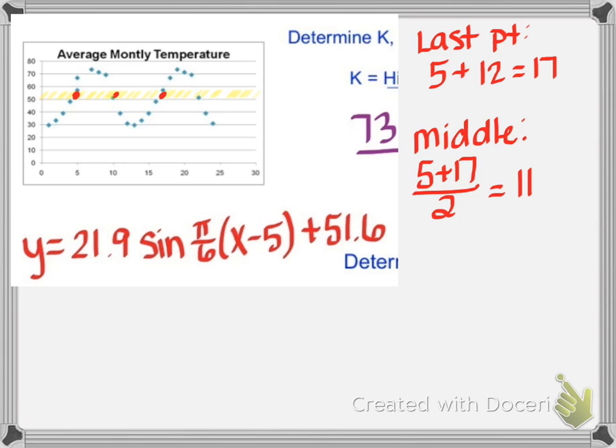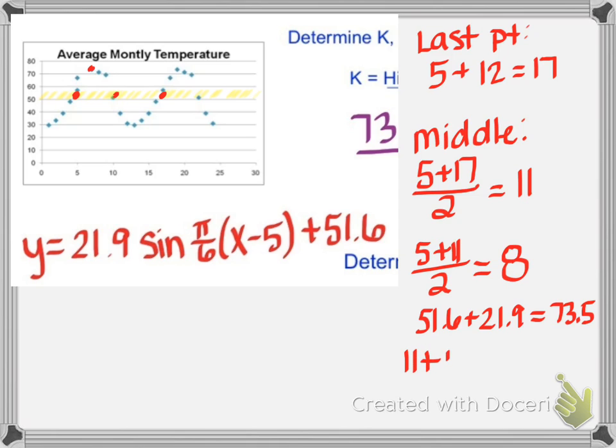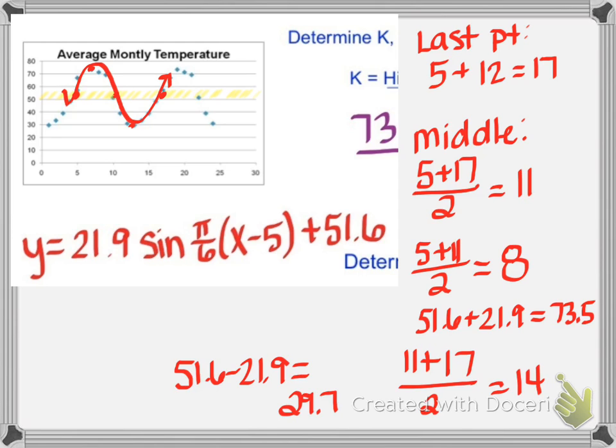I'm going to need to find the middle of 5 and 11. So I'm going to add 5 and 11 and divide by 2, and I'm going to get an x-value of 8. Now to find the y-value, I'm going to take the center line, that 51.6, and add the amplitude to it, 21.9. And when I do that, I'm going to find that highest point on my graph, which ends up being 73.5. And so we'll go ahead and plot that point. I'll have to do the same thing on the other side. So between 11 and 17, the middle there is going to be at 14. But this time, I'm going to take my shift, 51.6, and subtract my amplitude, 21.9. And you can see that that lowest point is at 29.7. I can put that on the graph. And now I have everything I need to sketch that equation.